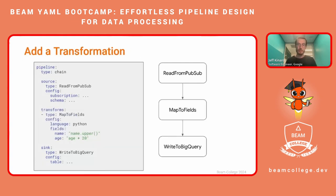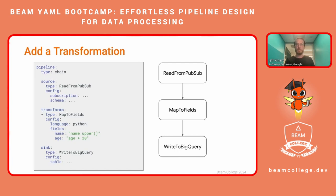Adding a transform — in this case, we're using one of our turnkey transforms, map to fields. This is how we map fields. We're imagining our row has fields name and age, and we want to do a little bit of processing on those before we write them out. We're taking the name and uppercasing it, and for the age we're adding 20. The thing to note here is that transforms tag — every transform within that tag, in this case we just have one, will be chained together between the source and the sink. And each of those transforms will have a config.